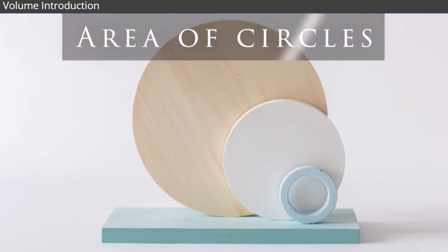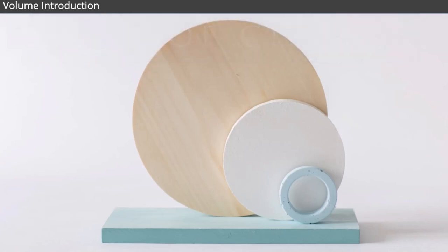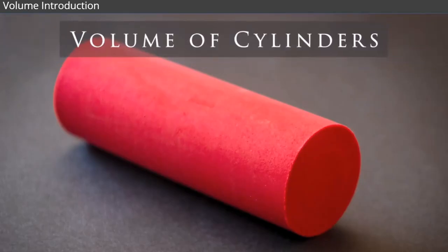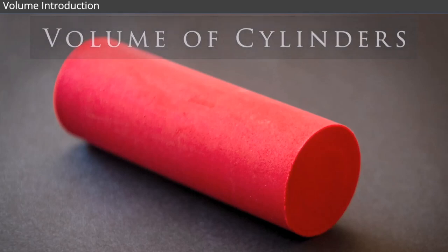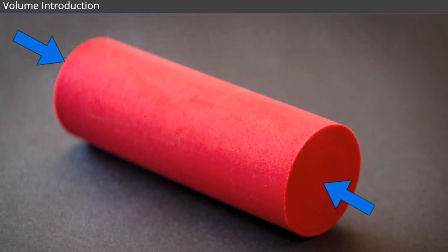Now that we know how to find the area of circles, we can use that information to find the volume of cylinders. A cylinder is a three-dimensional shape, consisting of two parallel circular bases, joined by a curved surface.